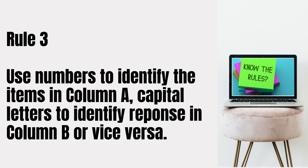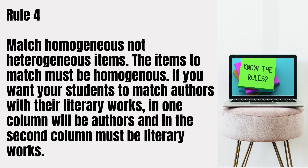Rule number three: use numbers to identify the items in column A and capital letters to identify responses in column B, or vice versa. Rule number four: match homogeneous, not heterogeneous items. The items to match must be homogeneous. For example, if you want your students to match authors with their literary works, one column will have authors and the second column must have literary works.